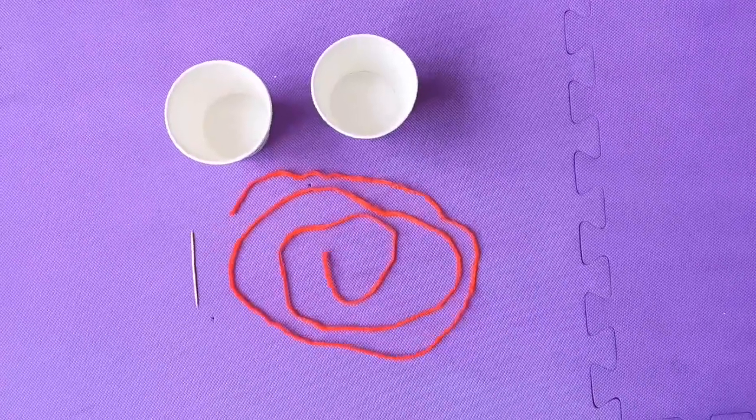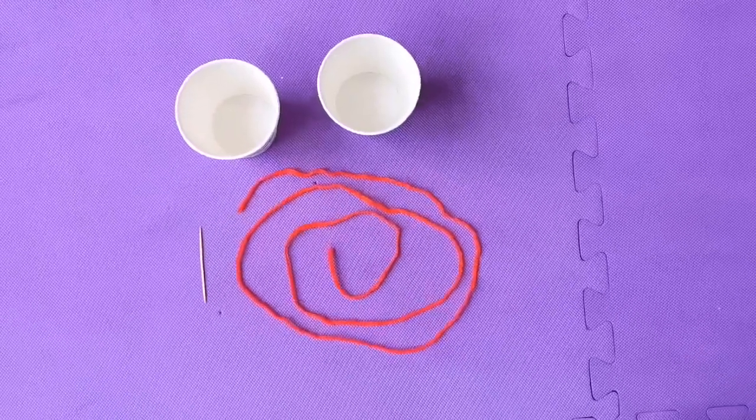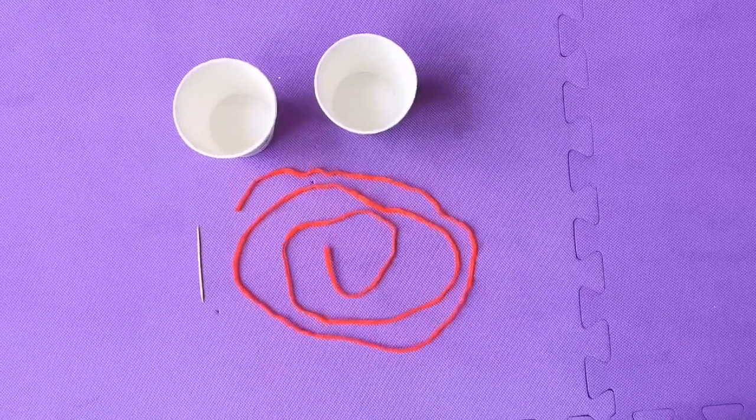Now these are all the materials that we're going to use to make our telephone cups: two paper cups, a string, and a toothpick.